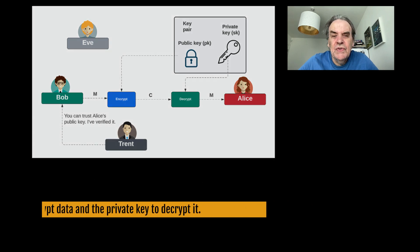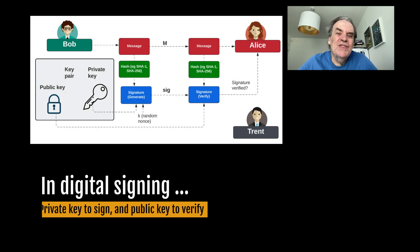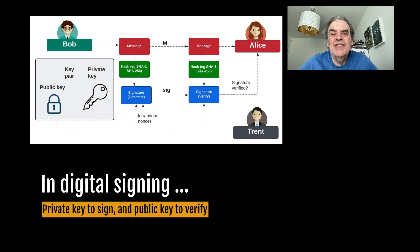In public key encryption we use the public key to encrypt data and the private key to decrypt it. In digital signing we use the private key to sign a hash and create a digital signature, and then the associated public key will verify the signature.